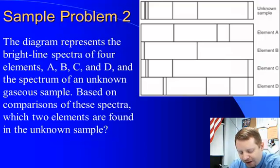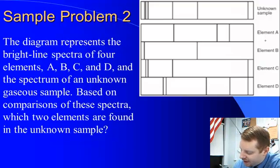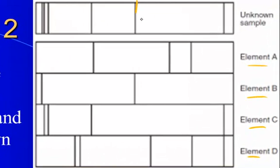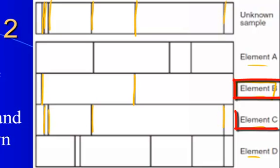In question two, the diagram represents the bright line spectra of four elements A, B, C, and D, and the spectrum of an unknown gaseous sample at the top. Based on comparisons of these spectra, which two elements are found in the unknown sample? We need to find elements that have lines in the exact same place as the unknown sample. In our unknown we've got a line here and there—that matches up. In B we've got a line here, and a similar line up here in the unknown, so B has to be one of our elements. We also have a line here and here, here and here, and two there that all correspond. Elements B and C make up the unknown sample because that's where you see the overlap of the emission spectra.